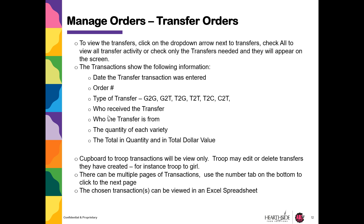Let's look at Transfer Orders. To view transfer orders, you must select the type of transfer you wish to view — click All to see all transfers, or check only the transfers needed. You can get the following information for each order: the date the transaction was entered, the order number, the type of transfer — Girl to Girl, Girl to Troop, Troop to Girl, Troop to Troop, Troop to Cupboard, or Cupboard to Troop. Who received the transfer will be your Troop, and who the transfer is from is potentially a Cupboard or another Troop. The quantity of each variety and the total dollar value are also shown.